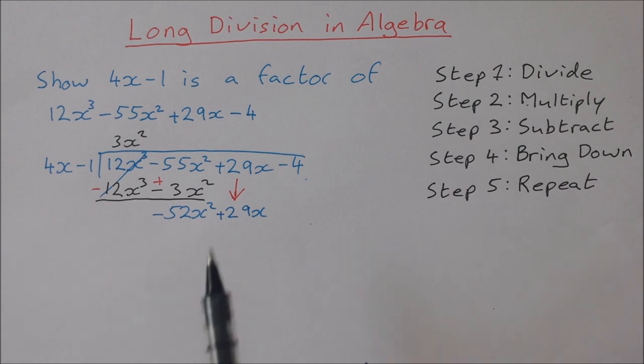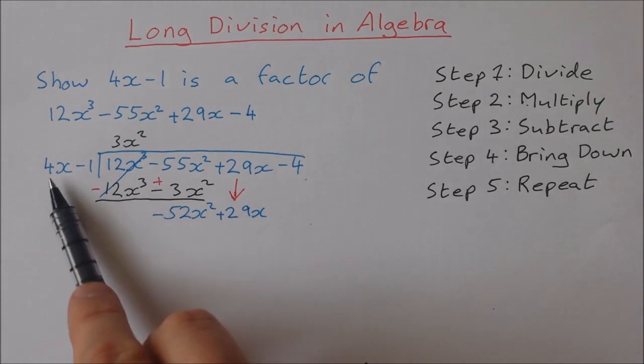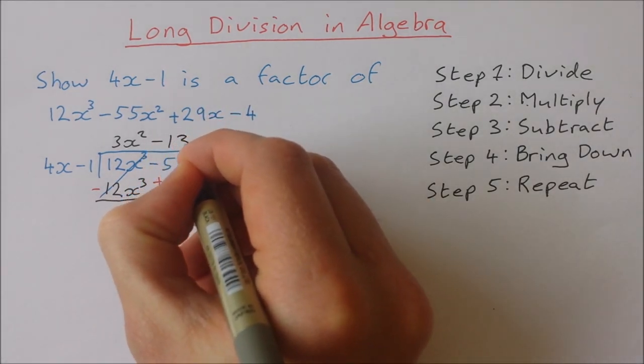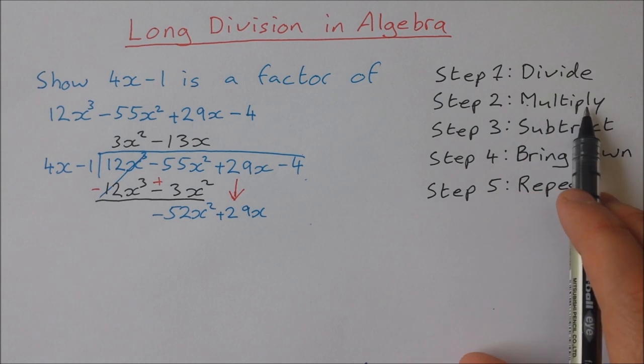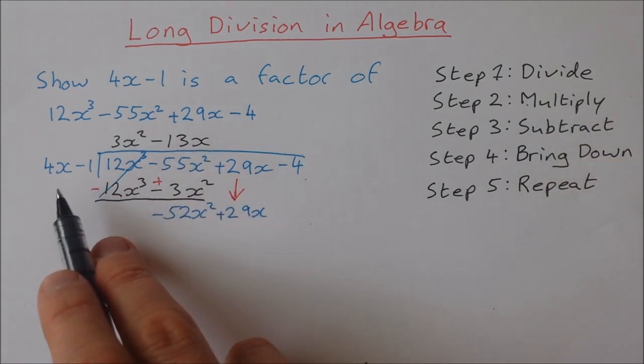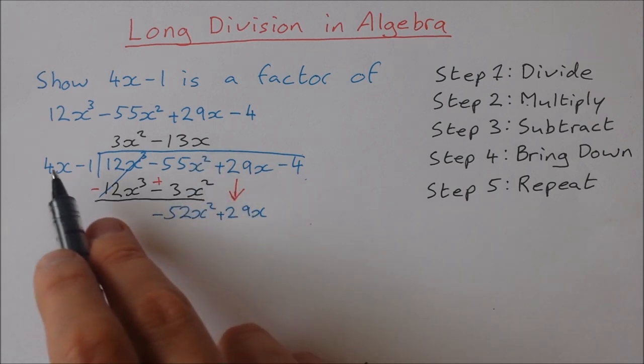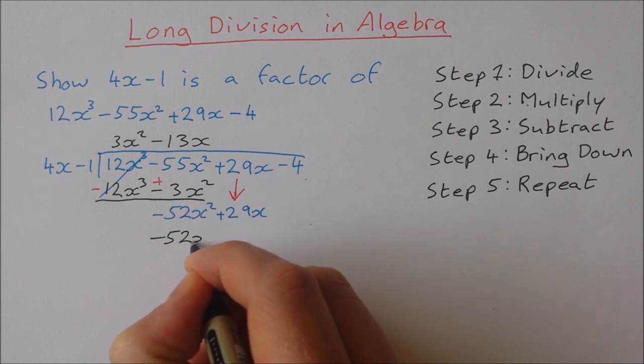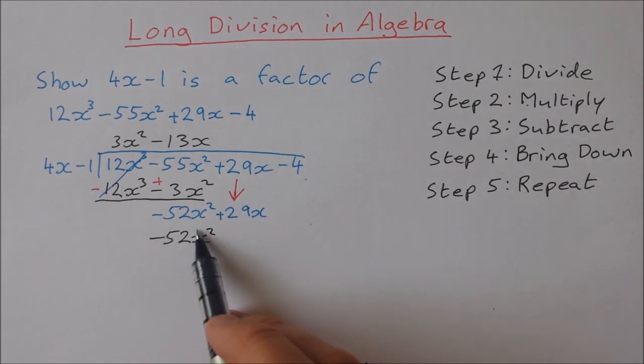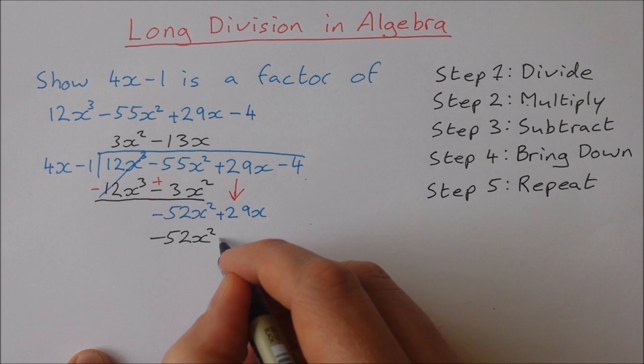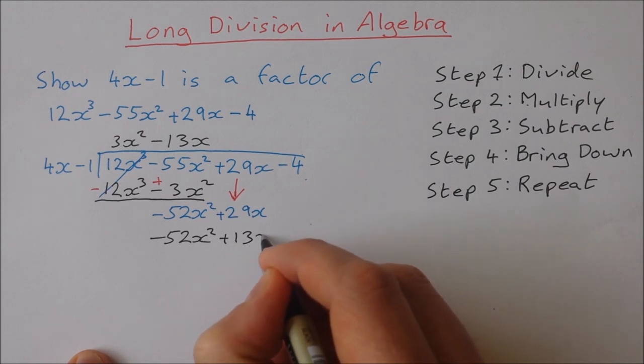I'm going to divide minus 52x squared by 4x. That will give me minus 13x. Step 2 multiply. I'm going to multiply minus 13x by 4x. Minus 13x by 4x will give me minus 52x squared. You'll notice that these numbers here are always the same. Minus 13x by minus 1 is plus 13x. That's step 2 multiply.